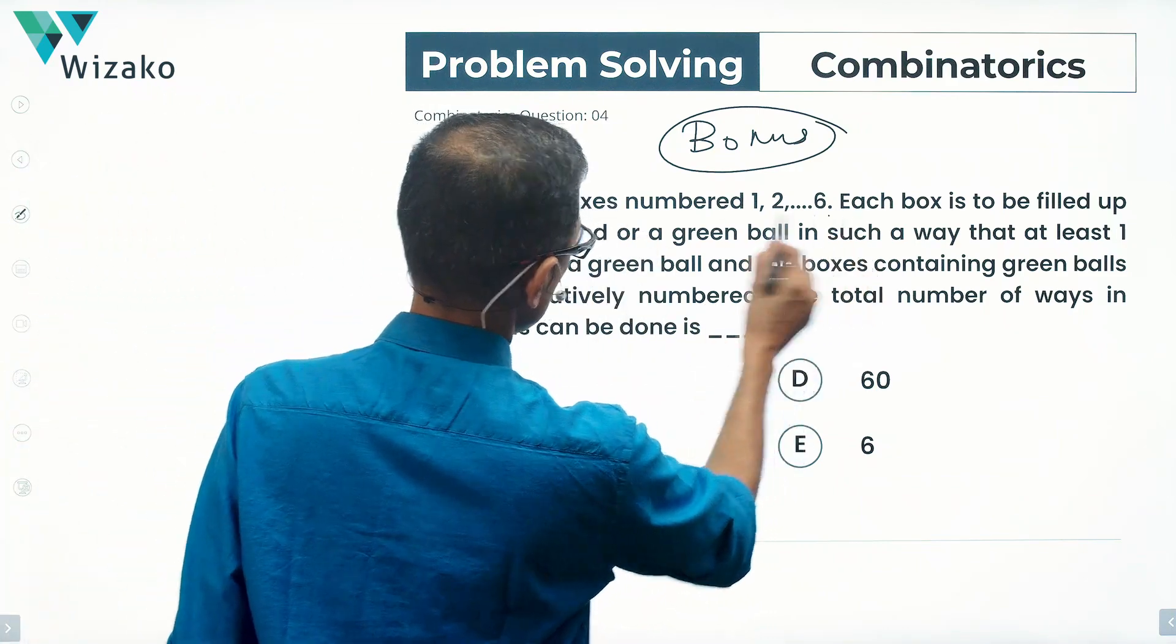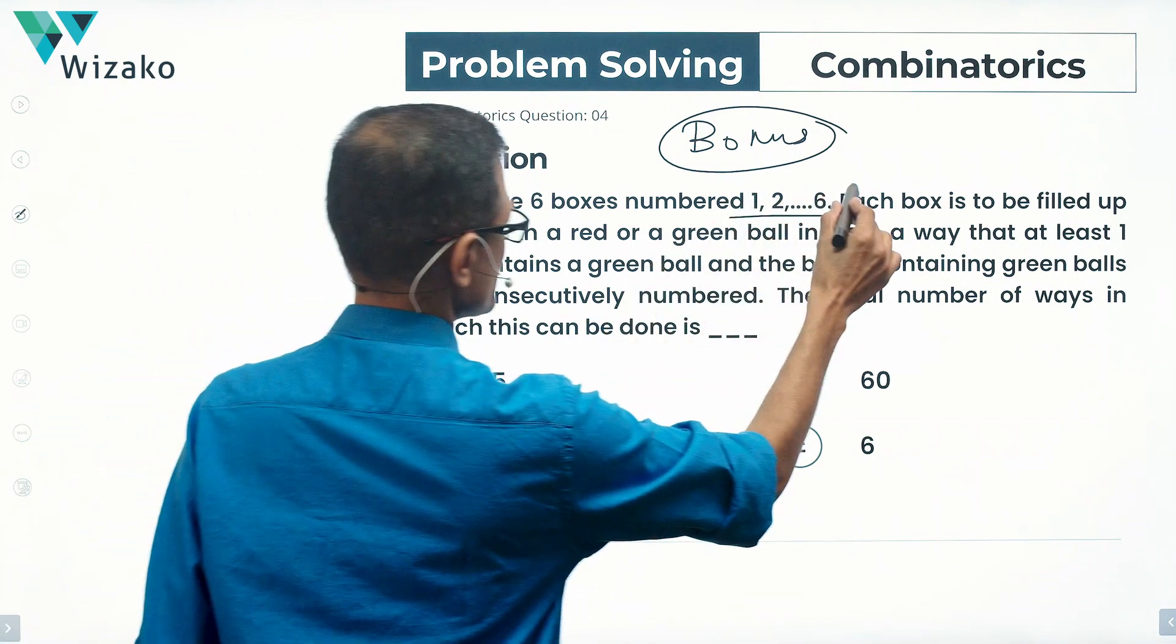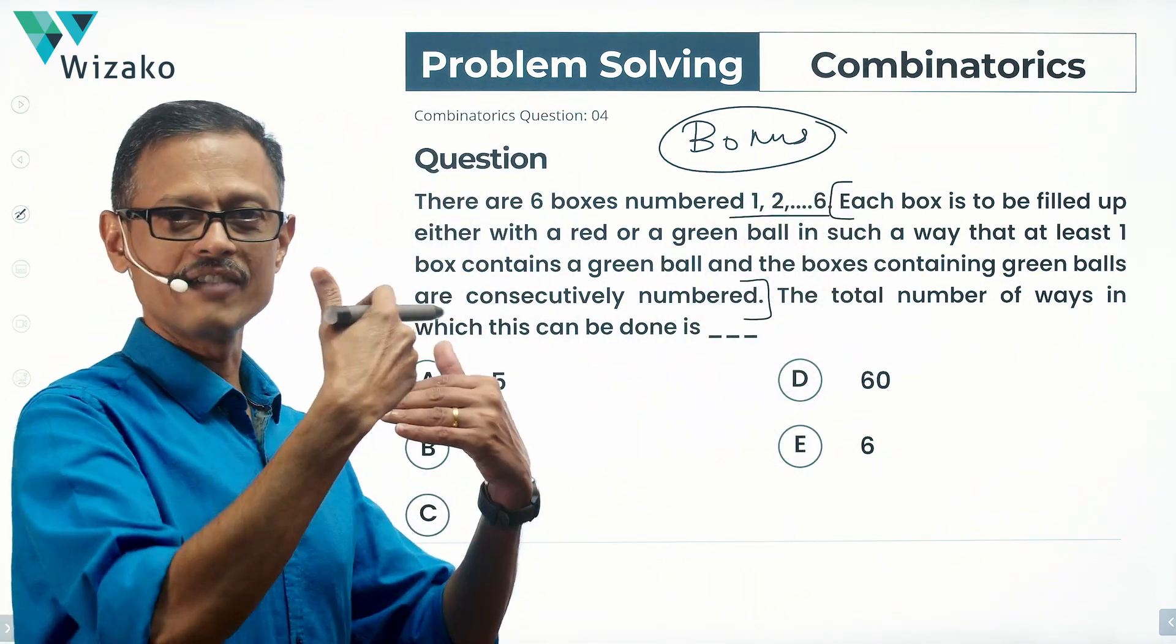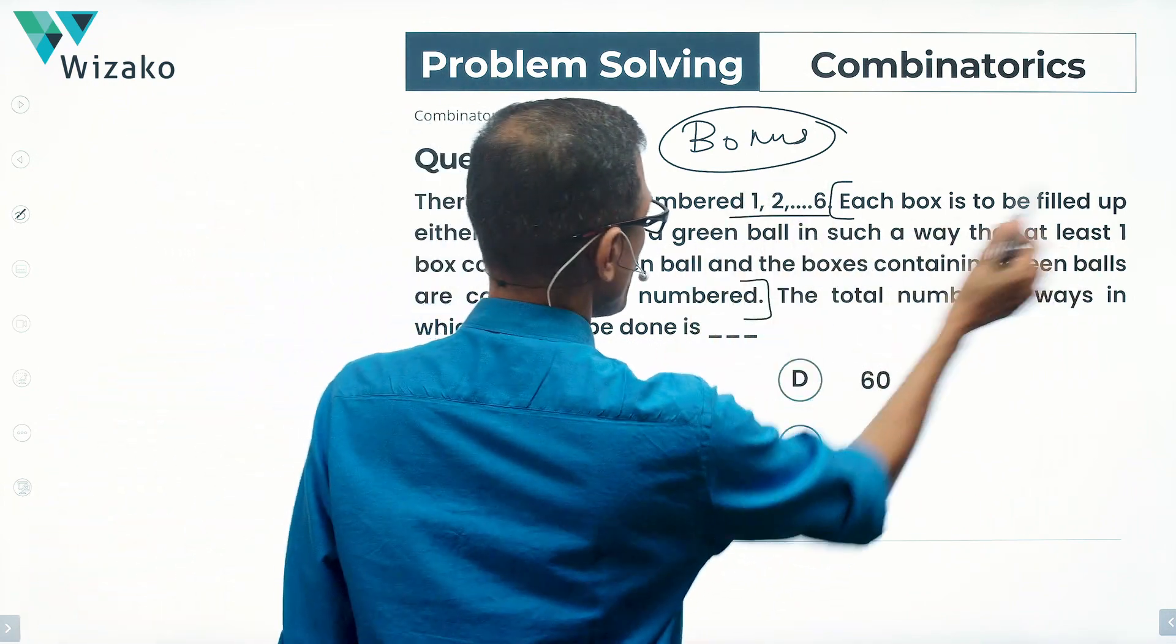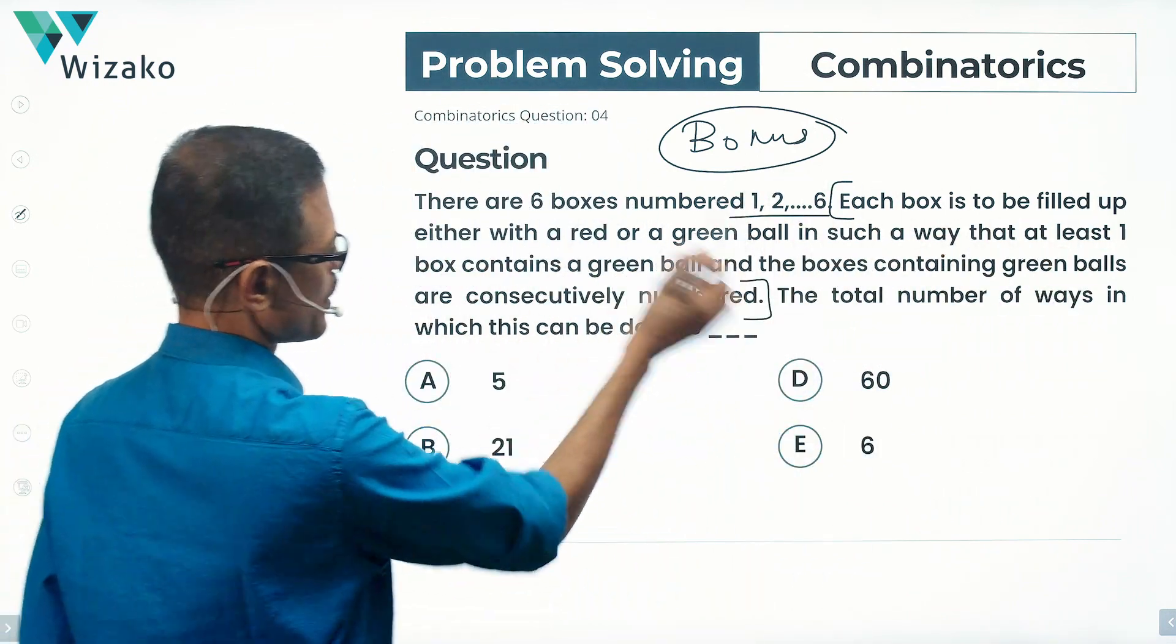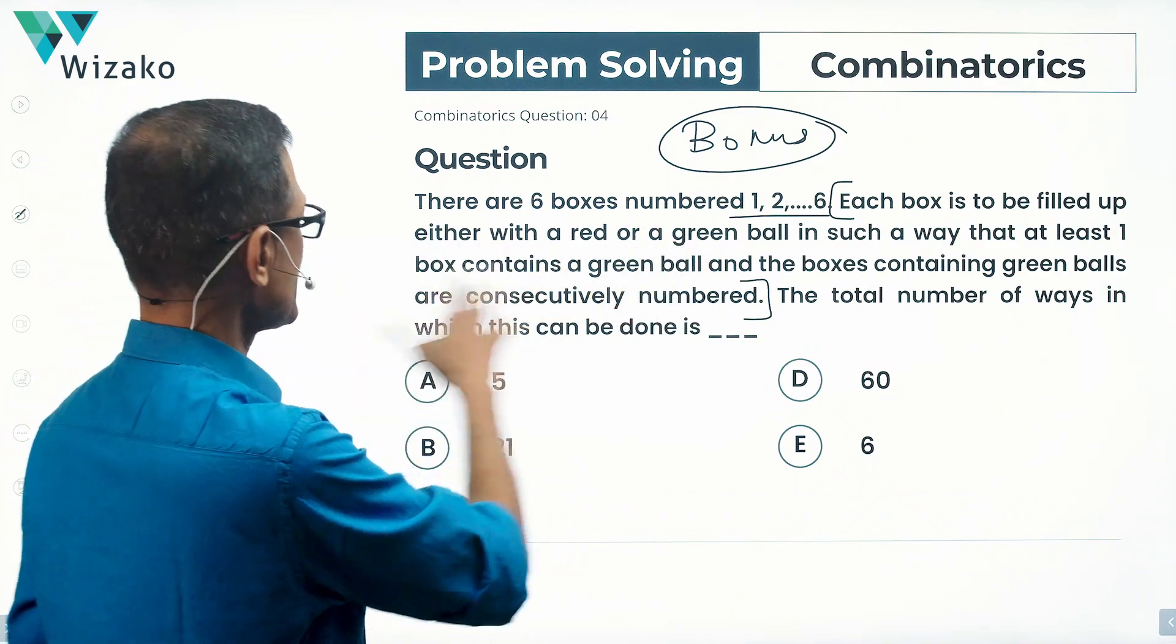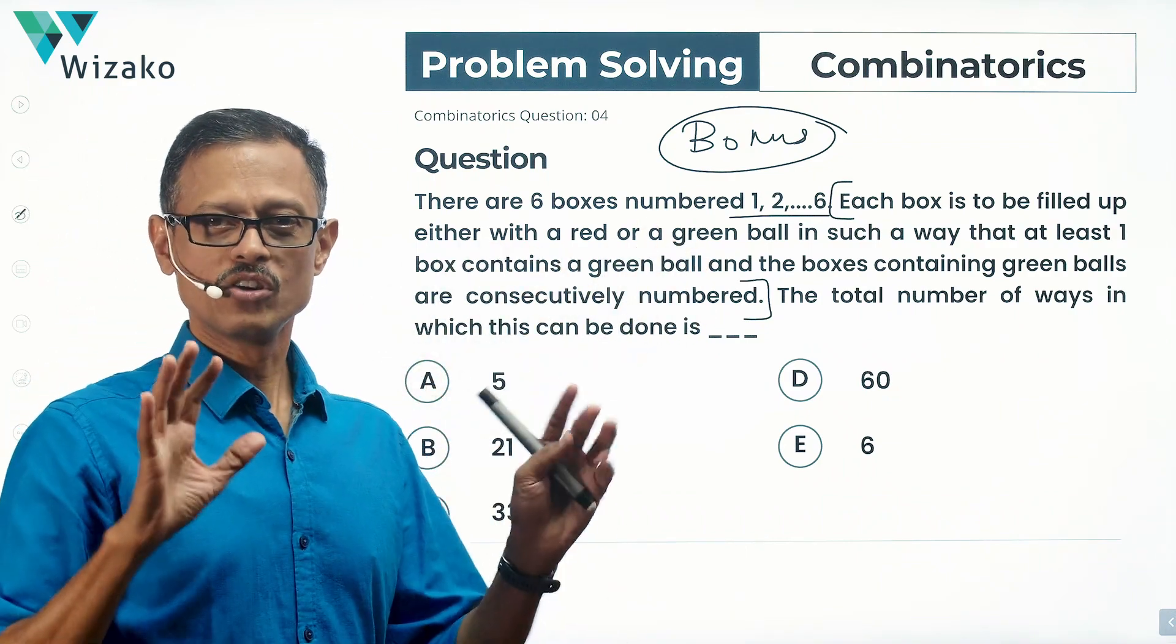There are six boxes numbered 1 to 6. This is a long sentence. I'm going to read it. We'll make sense out of it after having read it once. Each box is to be filled either with a red or a green ball in such a way that at least one box contains a green ball, and the boxes containing green balls are consecutively numbered.